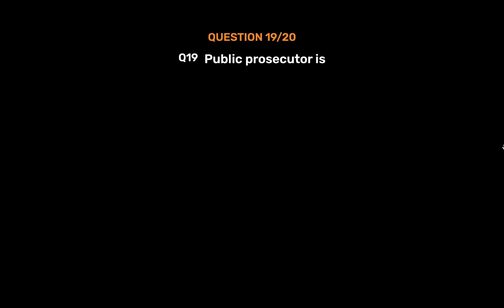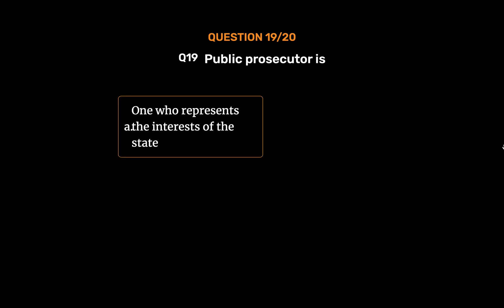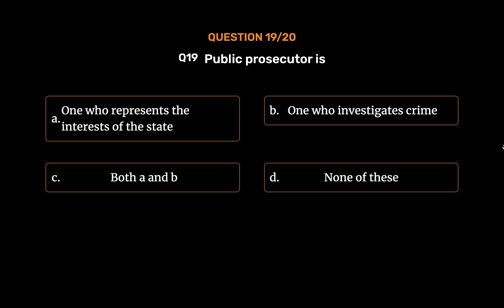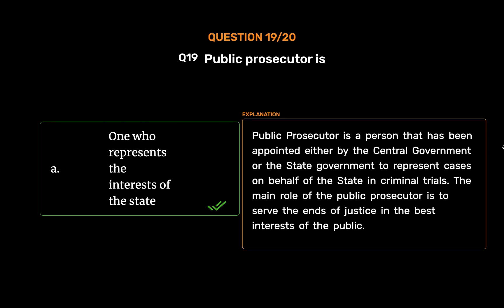Question No. 19. Public prosecutor is: Option A: One who represents the interests of the state. Option B: One who investigates crime. Option C: Both A and B. Option D: None of these. The correct answer is Option A: One who represents the interests of the state. A public prosecutor is a person appointed either by the central government or the state government to represent cases on behalf of the state in criminal trials. The main role of the public prosecutor is to serve the ends of justice in the best interests of the public.